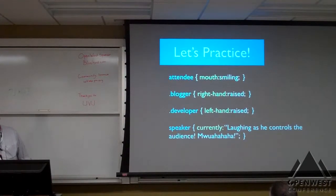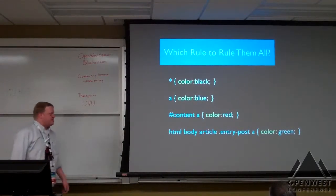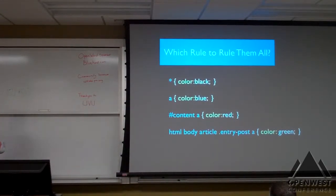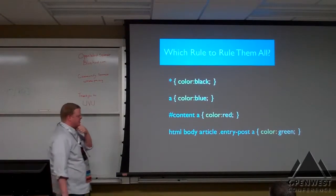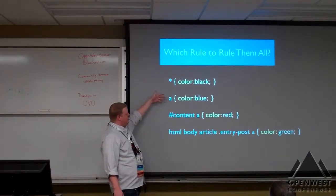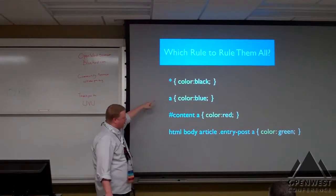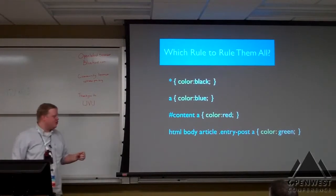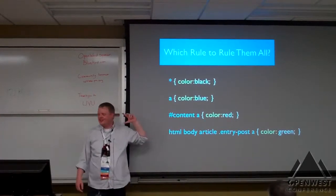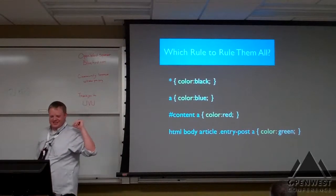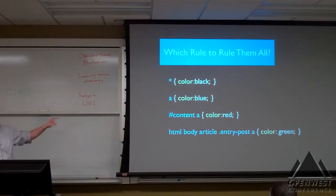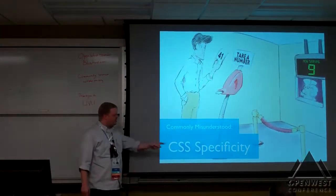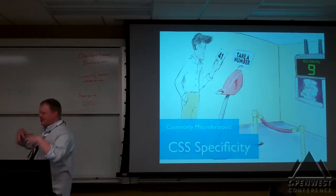Let's say we have an element in our document that matches all four of these rules — which rule would apply? Say I have an anchor tag and all these rules apply to it. What color would that anchor tag be? It will be red. The reason it's going to be red is something called CSS specificity. It took me a solid day of saying nothing else but 'CSS specificity' to be able to say it on demand.